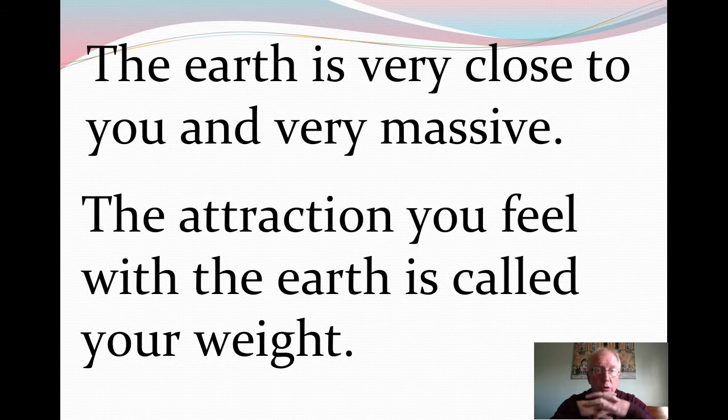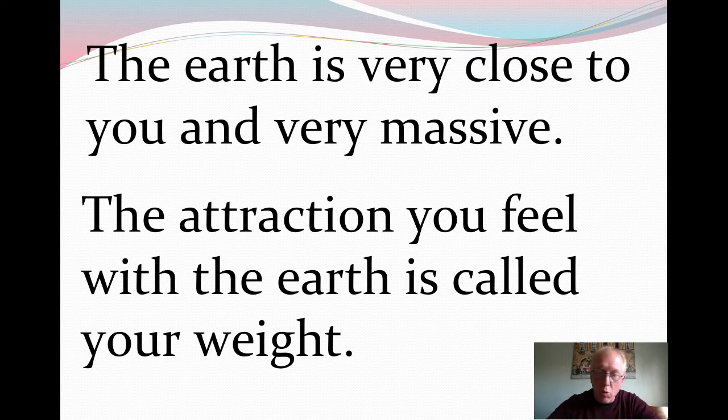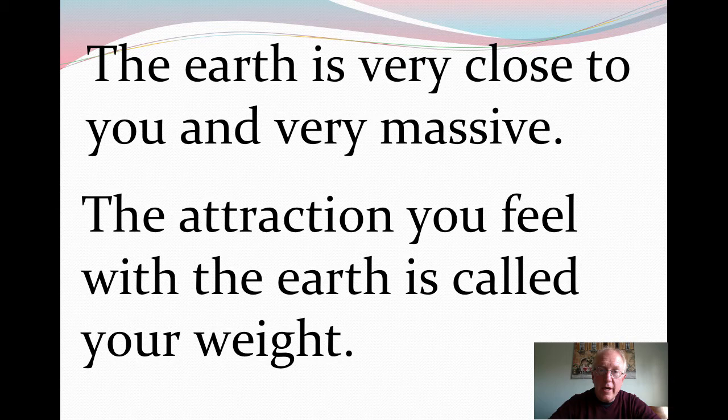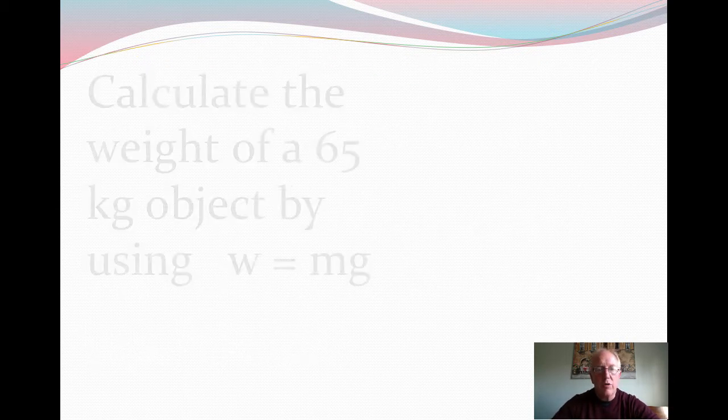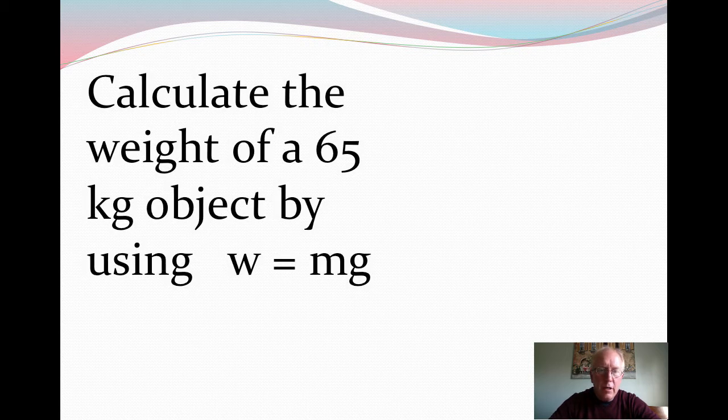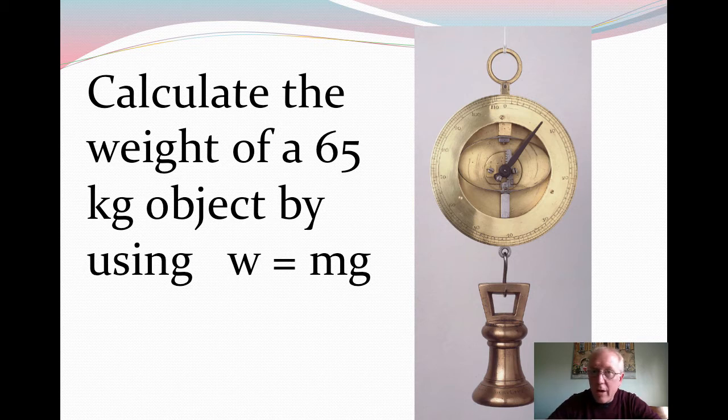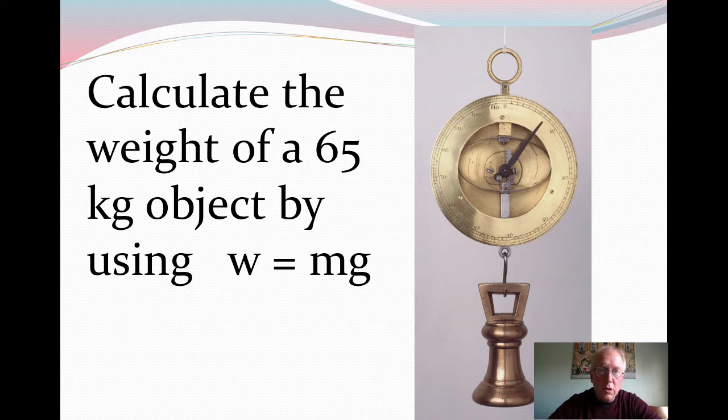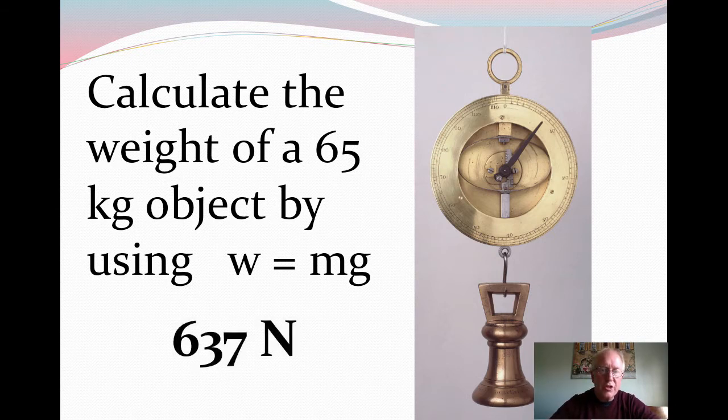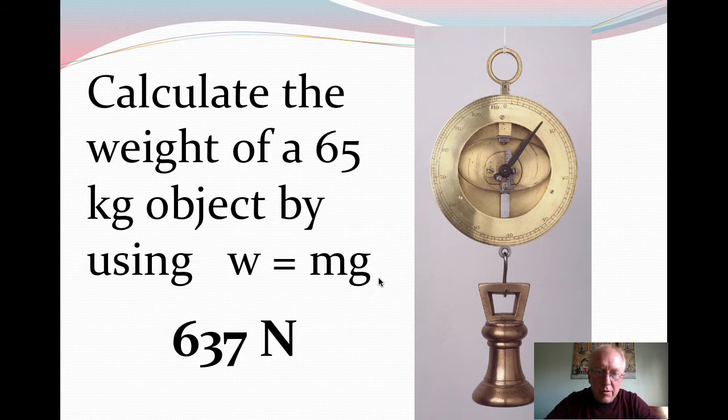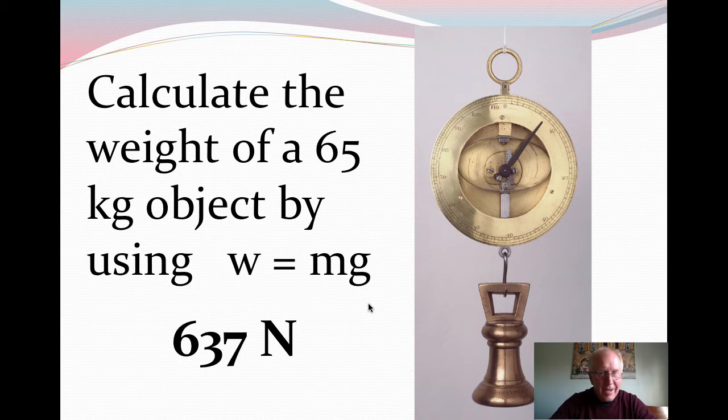Okay. The Earth is close and very massive, of course. And this attraction that we feel to the Earth, or we would feel with the Moon if we were there, or on any other planet, is what we call our weight. And we've already been talking about weight as w is equal to mg, the localized acceleration due to gravity. So how about that? Just for fun, calculate the weight of a 65 kilogram object using w is equal to mg and see what you come out with. After a quick pause, you can come back.